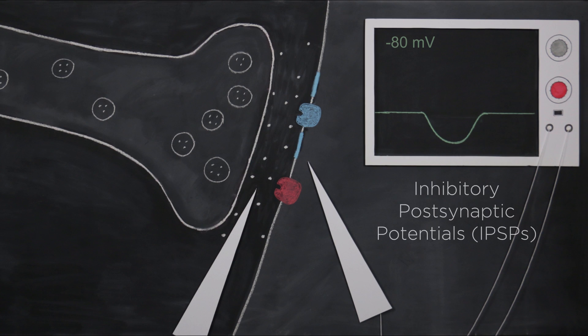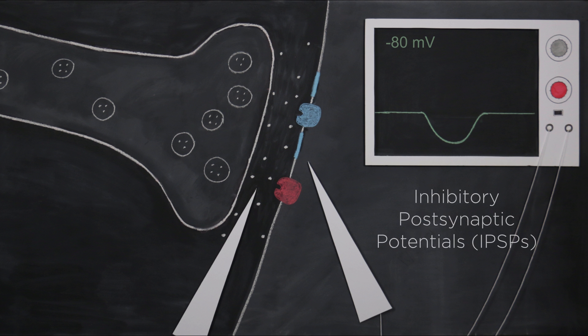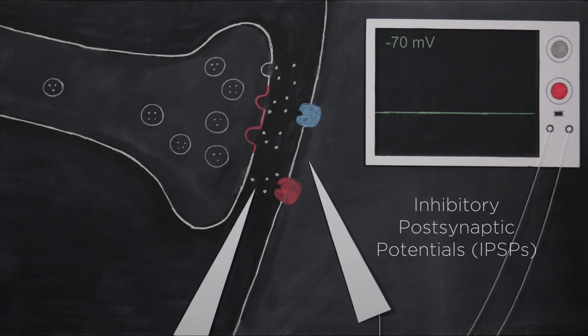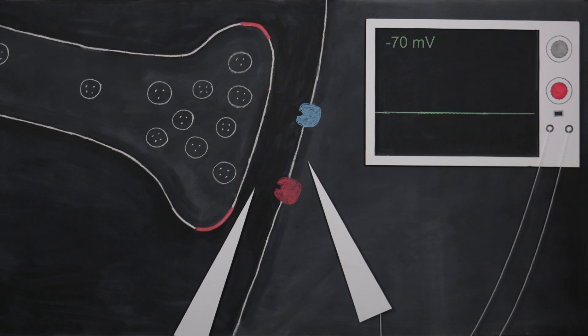Postsynaptic hyperpolarizations are called inhibitory postsynaptic potentials, or IPSPs, because they decrease the likelihood that the neuron will fire an action potential.